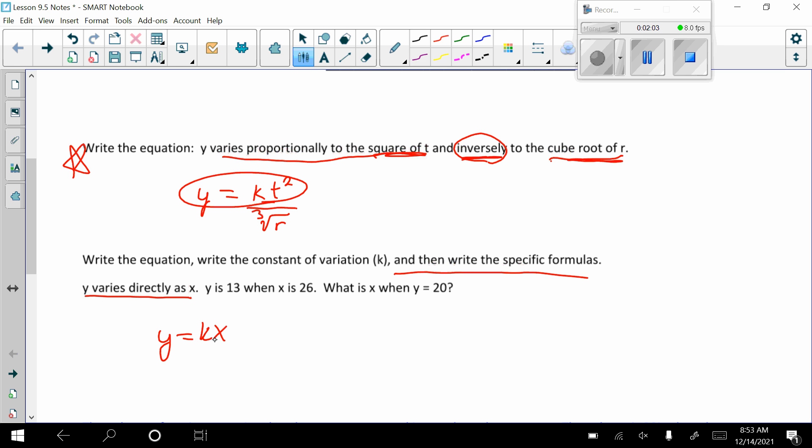And now it gives us, so that's all it is. So now it gives us when Y is 13, X is 26. So we're going to solve for K so that we can answer this. So K is, just like it says, it's our constant. So we can plug in any values and that K is going to stay the same. So let's go ahead and divide by 26. And so I have that K equals 1 half.